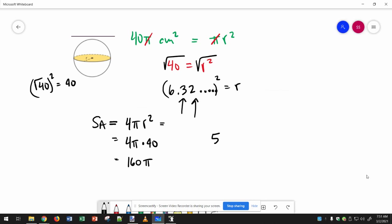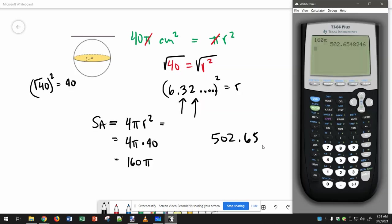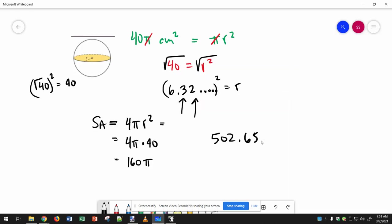So 502.65, is there anything after the 5? It's a 4, which is less than 5, so this would be our correctly rounded surface area, and the units would be square units, let's just say centimeters.